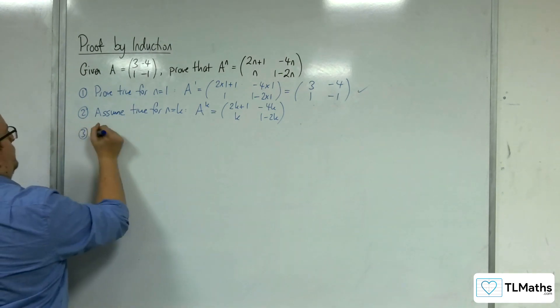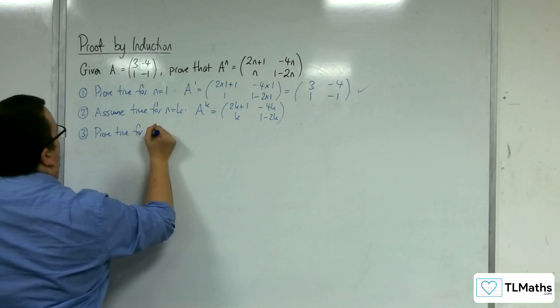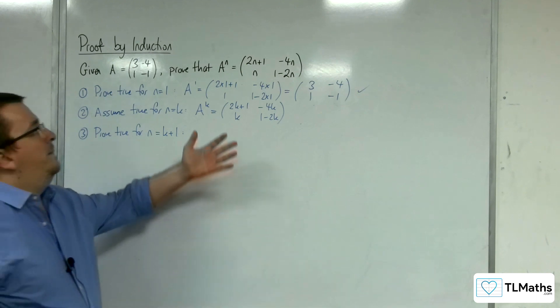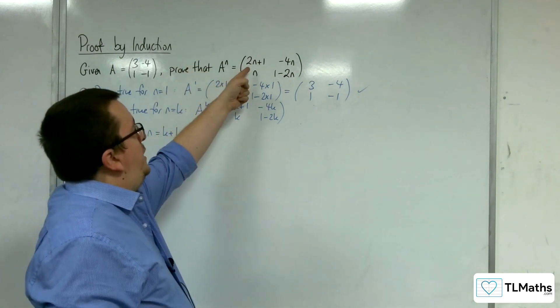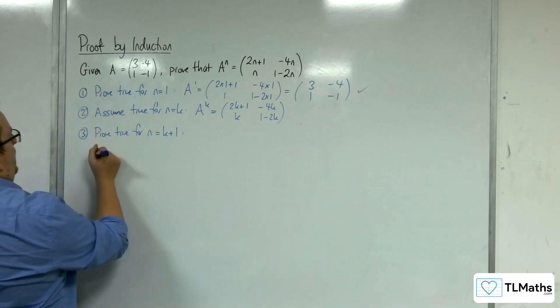Stage 3, we need to prove it's true for n equals k plus 1. So what we want to arrive at is a matrix where each of the n's has been replaced with k plus 1.